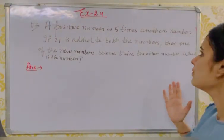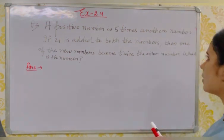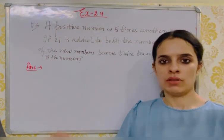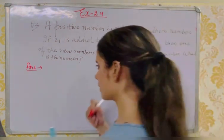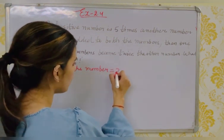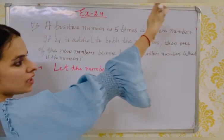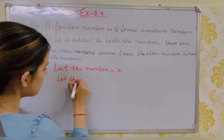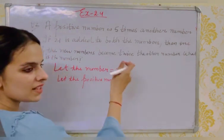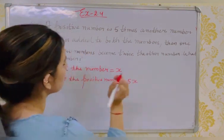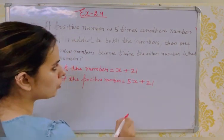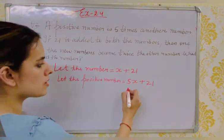Question 2: One positive number is 5 times the other number. If 21 is added to both numbers, then one of the new numbers becomes twice the other. What are the numbers? Let the smaller positive number be x, so the other positive number is 5x. If 21 is added to both: the new numbers are x + 21 and 5x + 21.